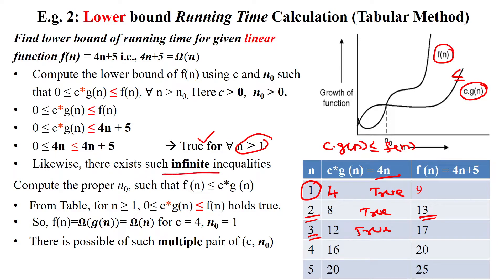There is possibility of infinitely such inequalities because we have taken the equivalent number 4n. Still, we are having the lesser numbers 3n, 2n, and 1n. So when you are substituting the values, you will get different pairs of c and g(n) for given n₀.